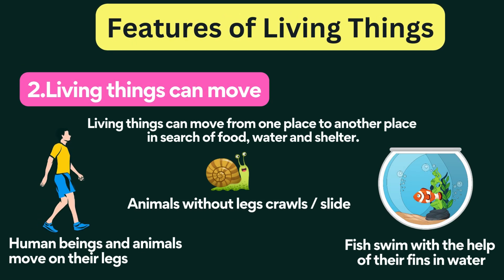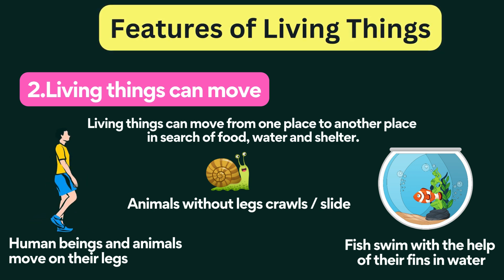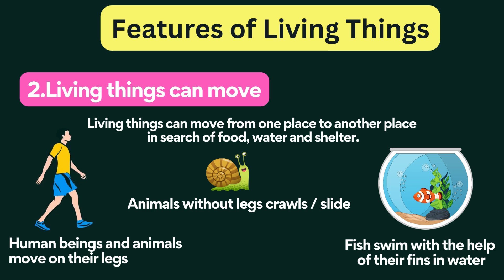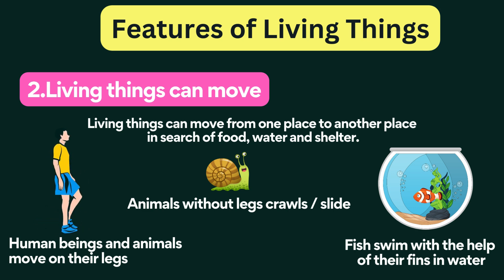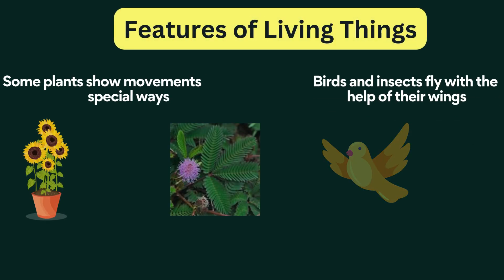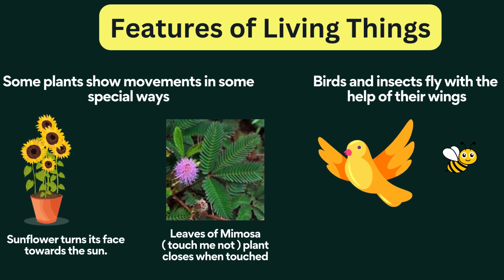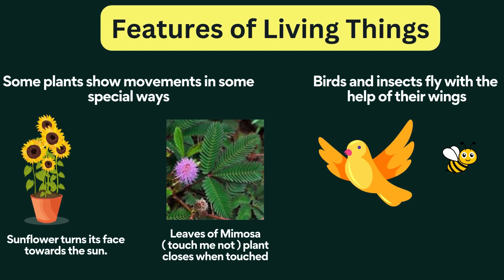Living things can move from one place to another in search of food, water, and shelter. Human beings and animals move on their legs. Snails, snakes, and earthworms can slide or crawl on the ground using their muscles. Fish swim with the help of their fins. Some plants show movement in special ways, such as the sunflower turning its face towards the sun and the leaves of mimosa, the touch-me-not plant, closing when touched. Most birds and insects move by flying using their wings and legs.